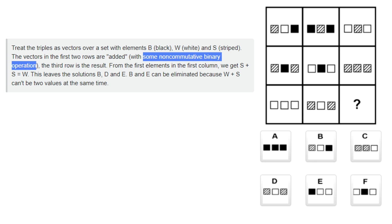The most upvoted comment said: 'Treat the triples as vectors over a set with elements black, white, and striped. The vectors in the two first rows are added with some non-commutative binary operation, which produces the third row as a result.' At first, I had no idea what a non-commutative binary operation was, and I'm sure there are plenty of people who don't understand the vector part either.